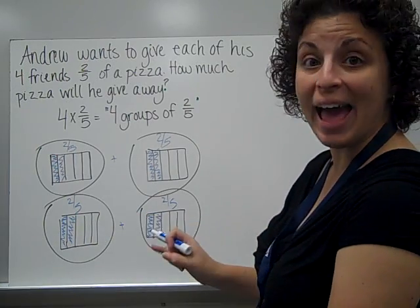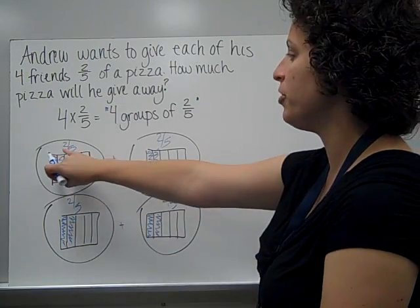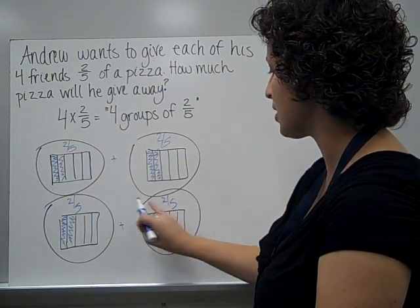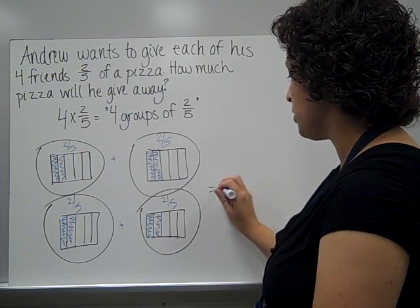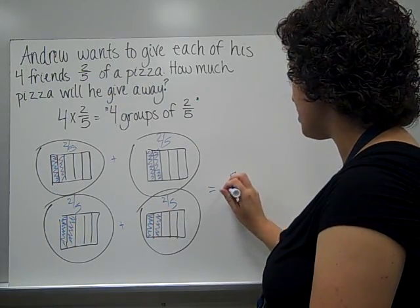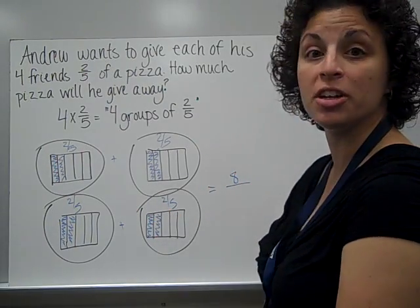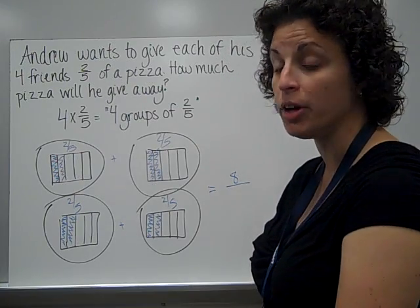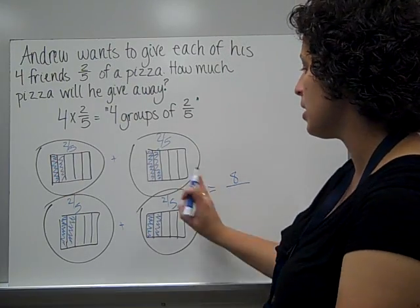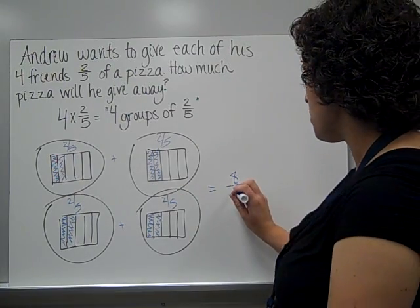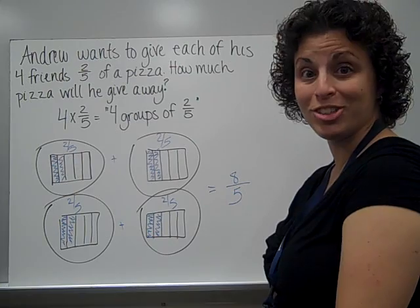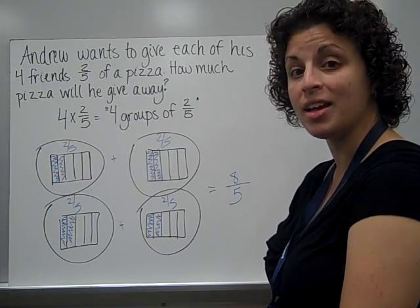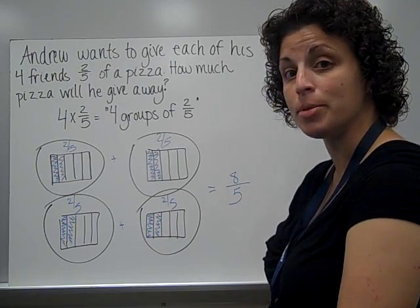When we add fractions, we add the numerators: 2, 4, 6, 8 — this is going to equal 8. Remember that the denominator stays the same when we add fractions; we do not add that part. So it's going to be 8 fifths, which is an improper fraction, so this definitely needs to be simplified.